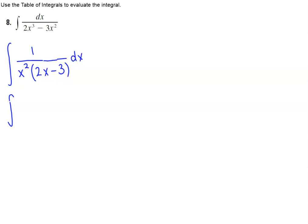Okay, and then what we can do is now we can reorder this to be 1 over x squared times negative 3 plus 2x times dx.